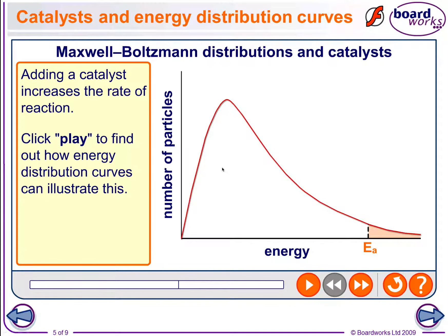The final part of AS kinetics we need to look at is how a catalyst works. A catalyst is a substance that speeds up a chemical reaction without itself being consumed. It does this by lowering the activation energy by providing an alternative pathway by which the reaction can occur. If asked in the exam, you would say a catalyst provides an alternative route with a lower activation energy, it doesn't get used up, and it speeds up the rate of the chemical reaction.